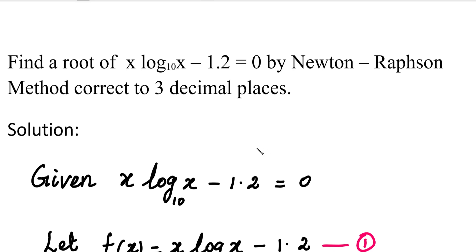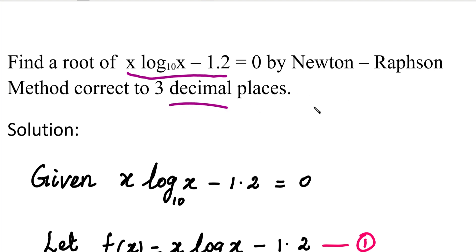Hi students. We will use Newton's Raphson method. We will use x·log(x) - 1.2 = 0. We will find the root correct to 3 decimal places. In this method, we will rearrange the equation f(x) = 0.